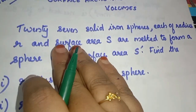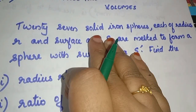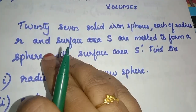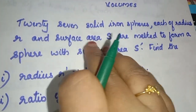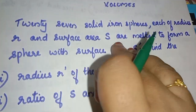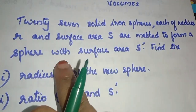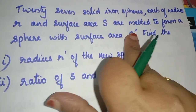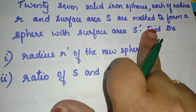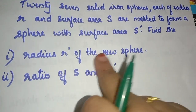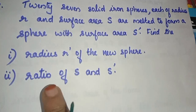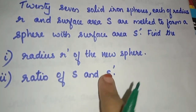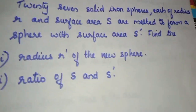The ninth question is: 27 solid iron spheres, each of radius R and surface area S, are melted to form a sphere with surface area S'. Find the radius R' of the new sphere and then the ratio of S and S'.